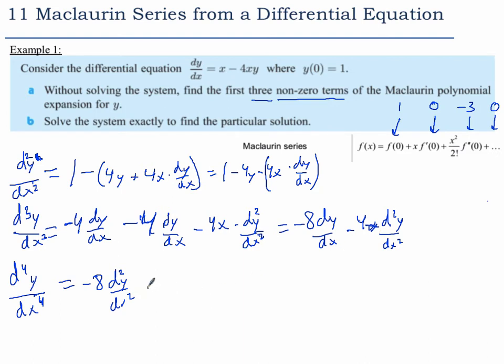We're going to have negative 8 times the second derivative. And this is going to be product rule again. Negative 4 times the second derivative.